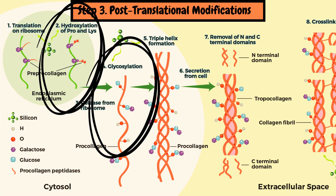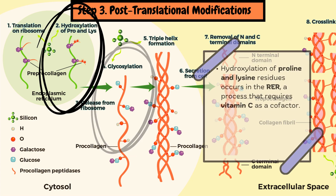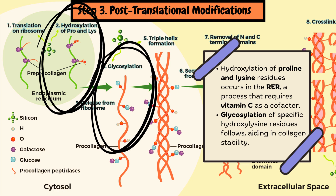Step 3: Post-translational modifications. Hydroxylation of proline and lysine residues occurs in the rough endoplasmic reticulum lumen, a process that requires vitamin C as a cofactor. Glycosylation of specific hydroxy-lysine residues follows, which aids in collagen stability.